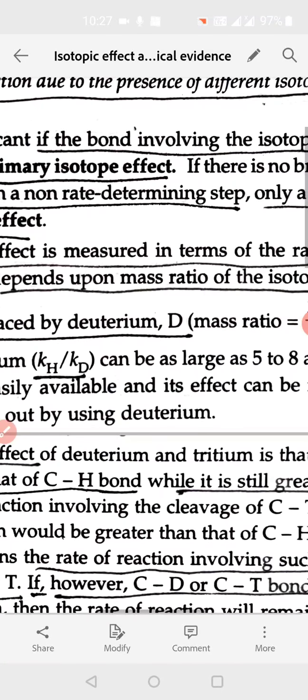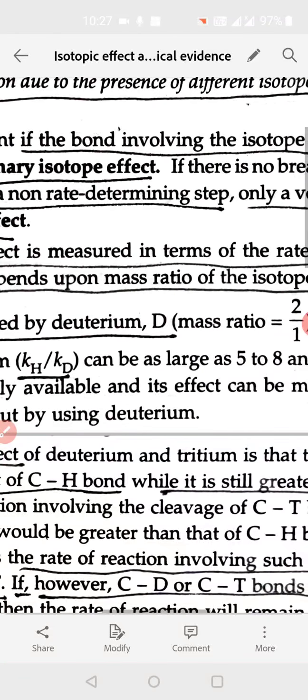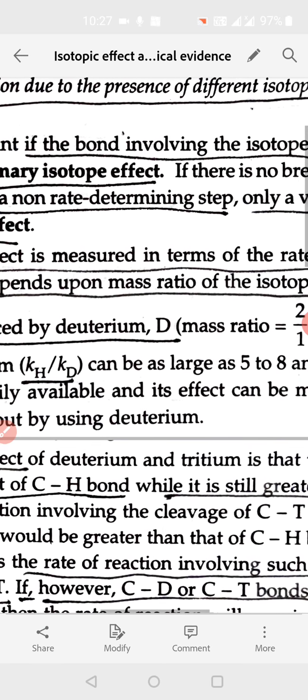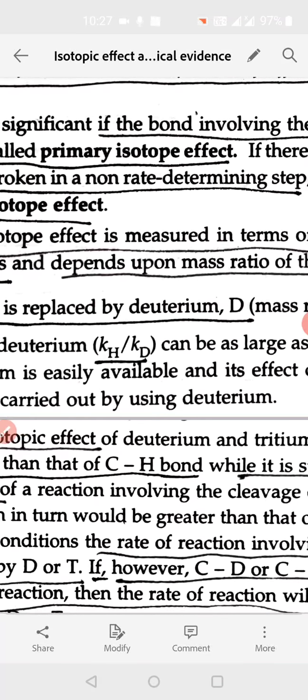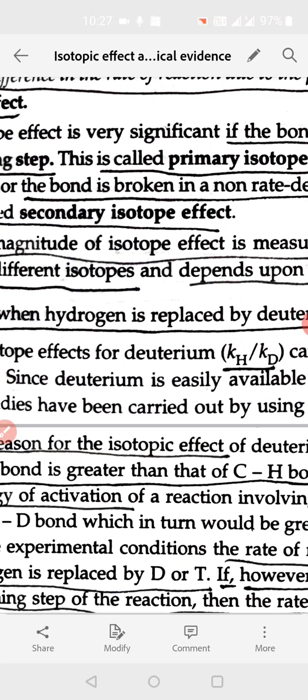If the bond is broken in non rate-determining step, it is not the fast step, it is not the slow step, if it is not breaking the carbon-hydrogen or carbon-deuterium bond, it is not influencing the rate of reaction. The rate of reaction is not impacted by carbon-hydrogen or deuterium.